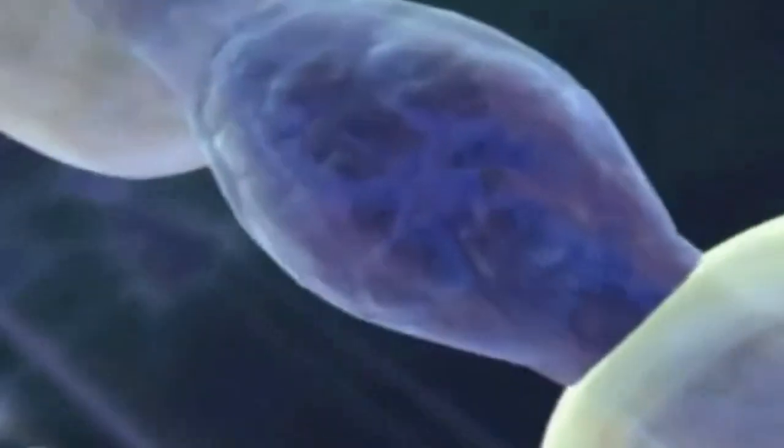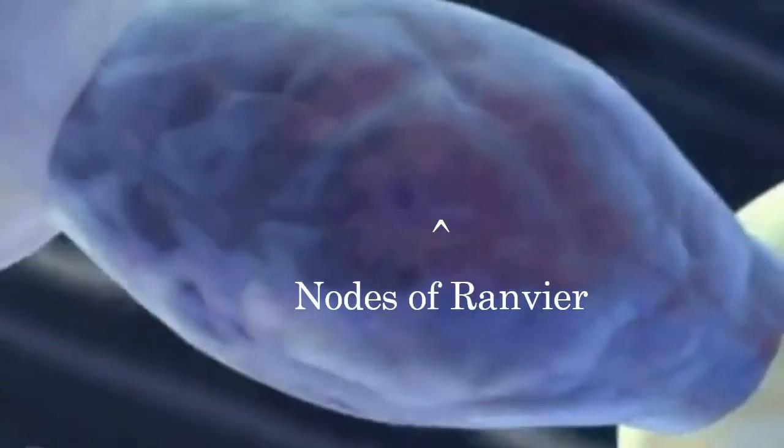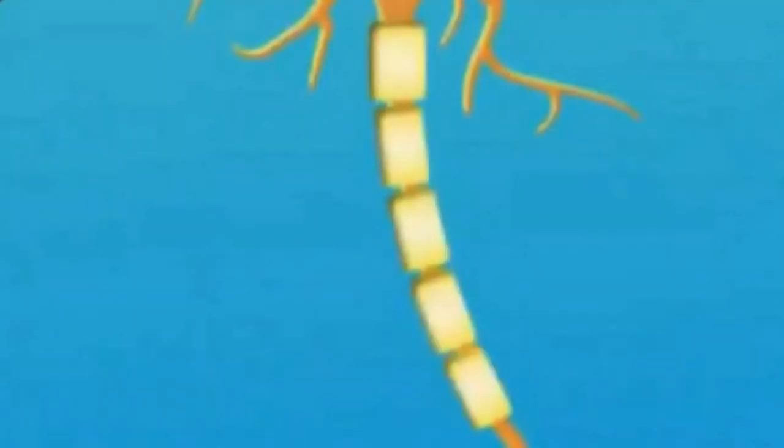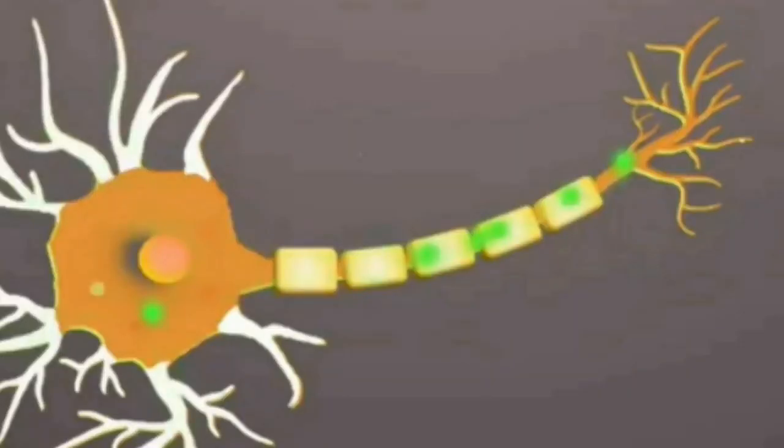This sheath is interrupted at regular intervals called nodes of Ranvier. The nodes of Ranvier facilitate the rapid conduction of nerve impulses along the axon. We can see small swellings at the terminal ends of the axon. These are called axon terminals.